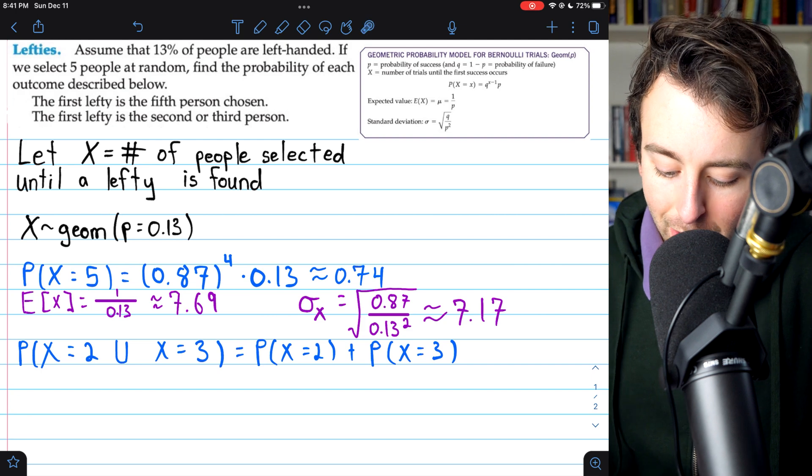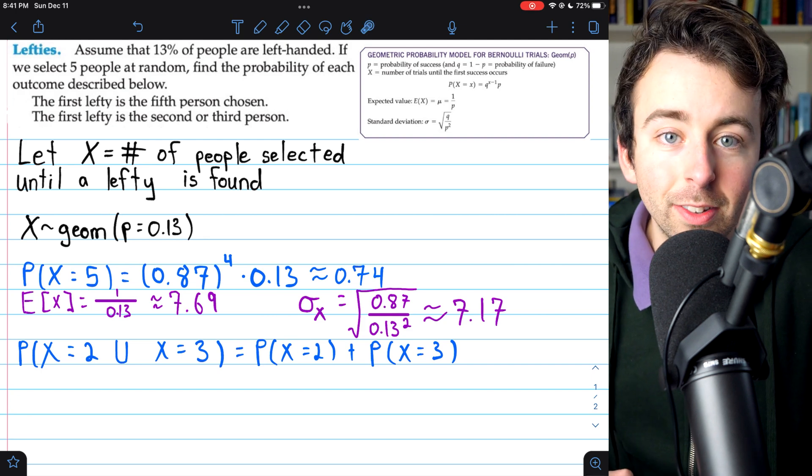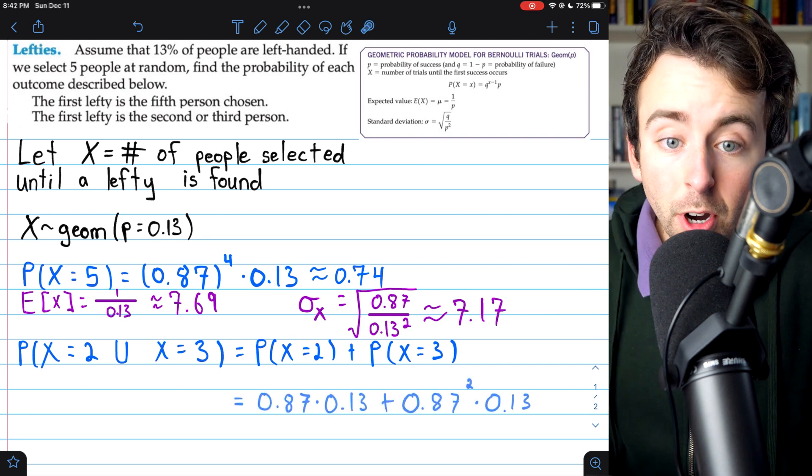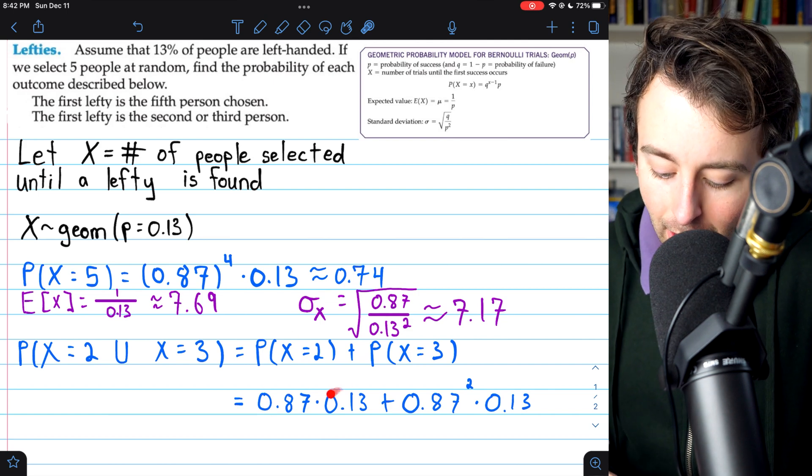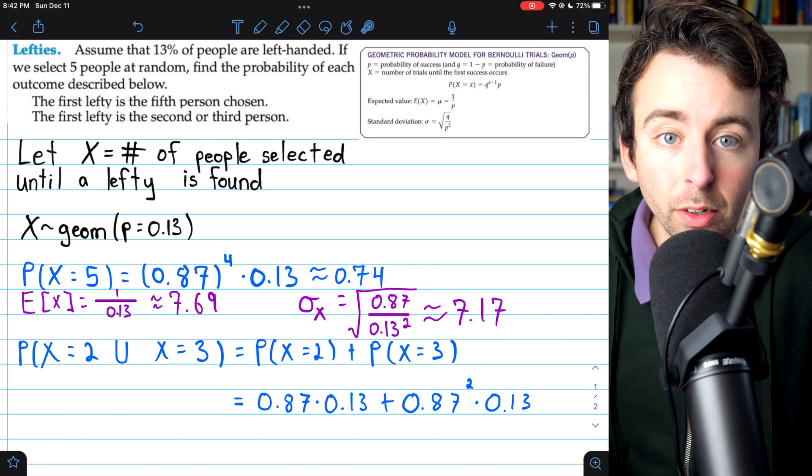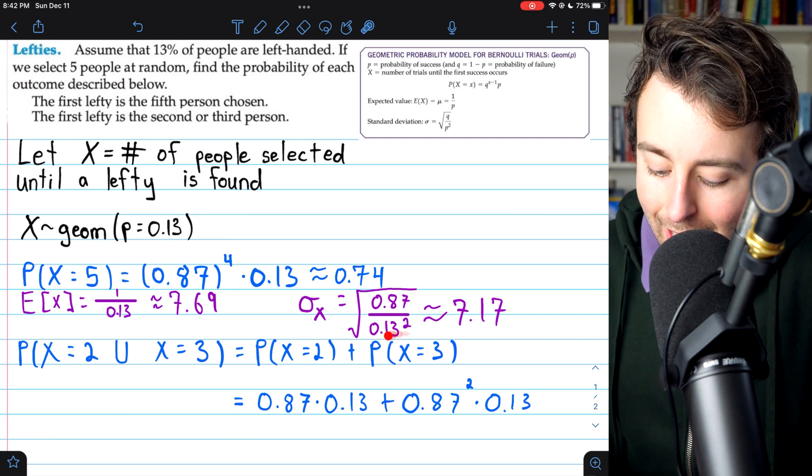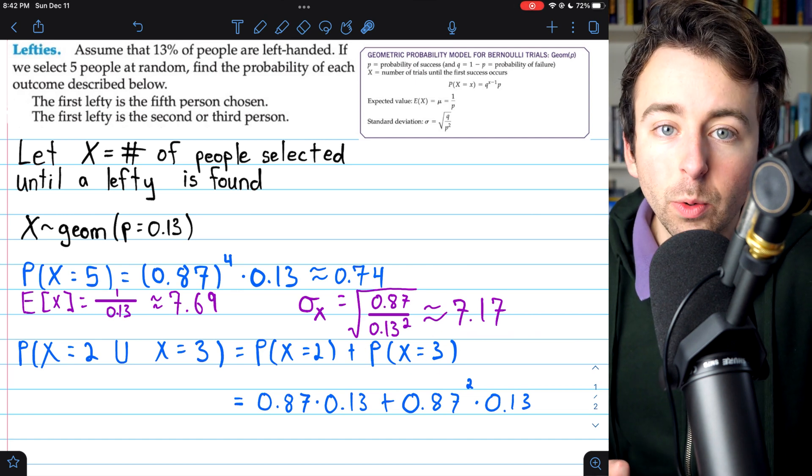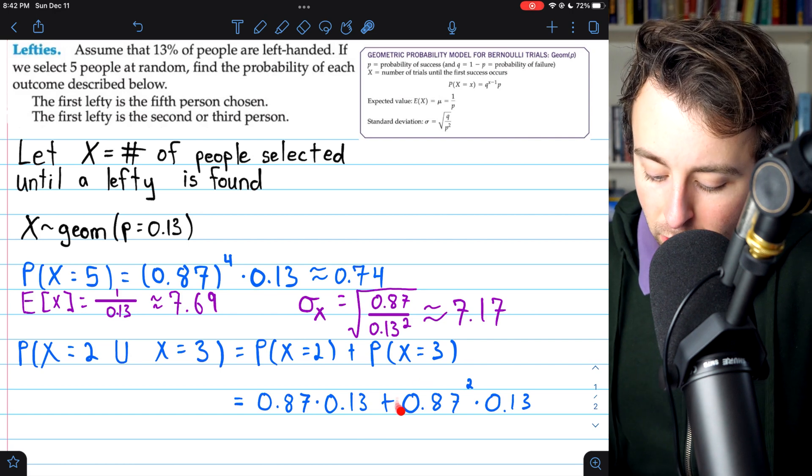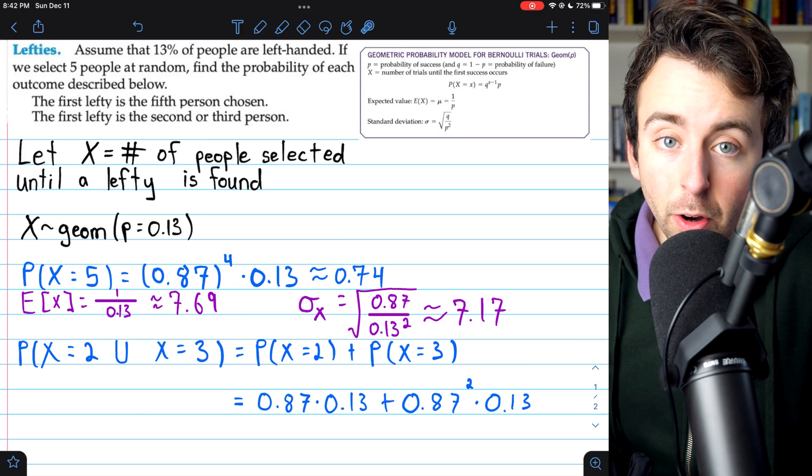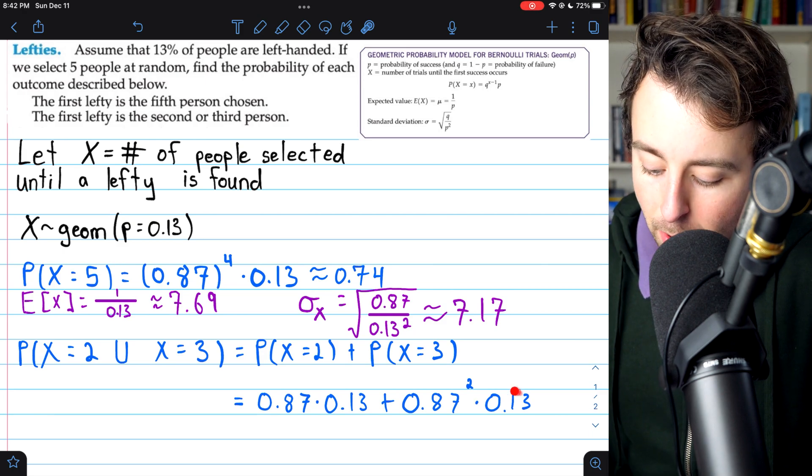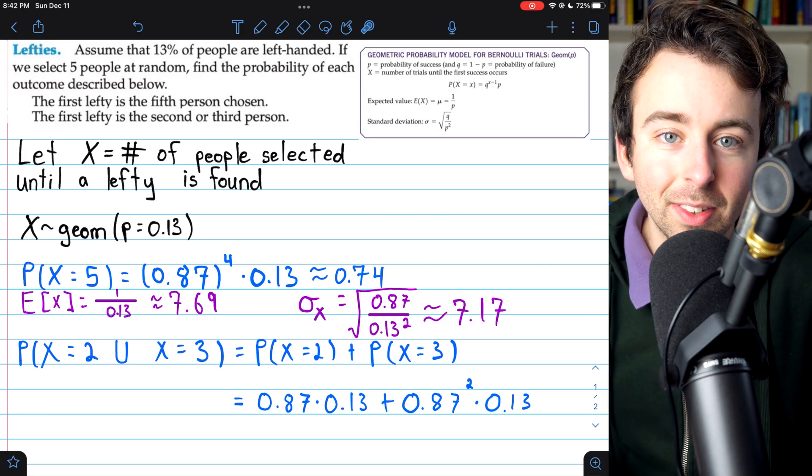So we're just left with two more geometric calculations to do, and then we can add them together. The probability that x equals 2 is just one failure, so 0.87, times that next success, so 0.13. And then we add the probability that x equals 3. That's just two failures, so 0.87 squared, but then we need the third trial to be a success, so we then multiply by the probability of success.